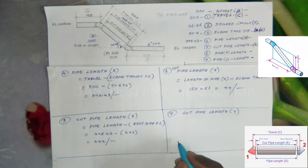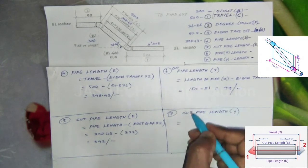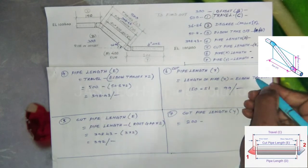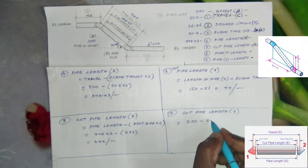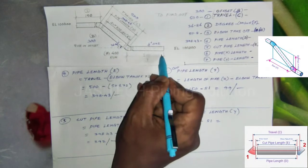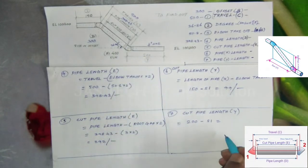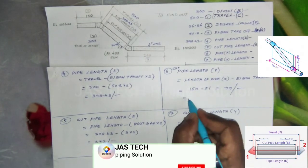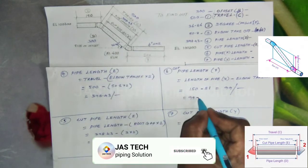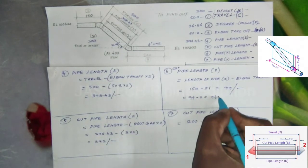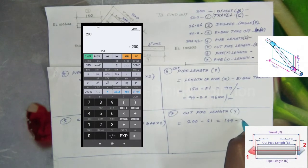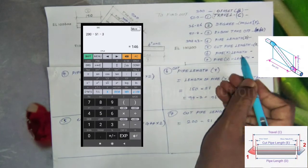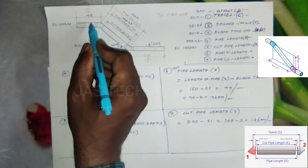Seventh one, cut pipe length Y. Same formula above: 200 minus 51 will come to 149, minus 1 root gap. So 99 minus 3 equals 96 millimeters for pipe length X. Cut pipe length Y equals 200 minus 51 minus 3, equals 146.